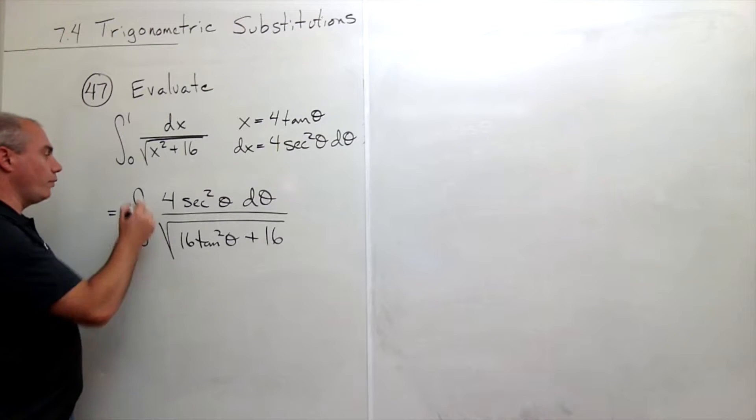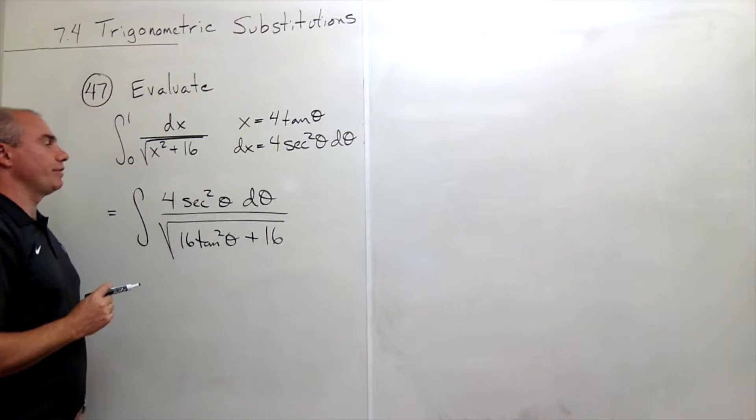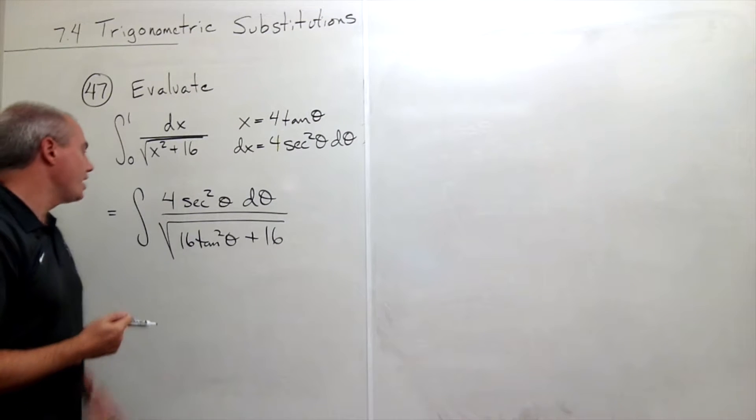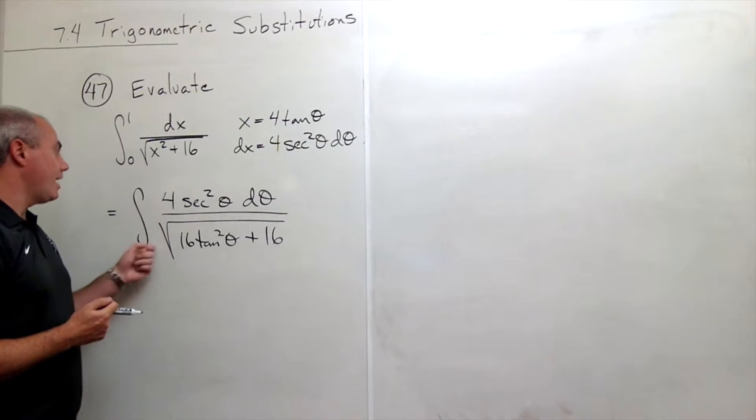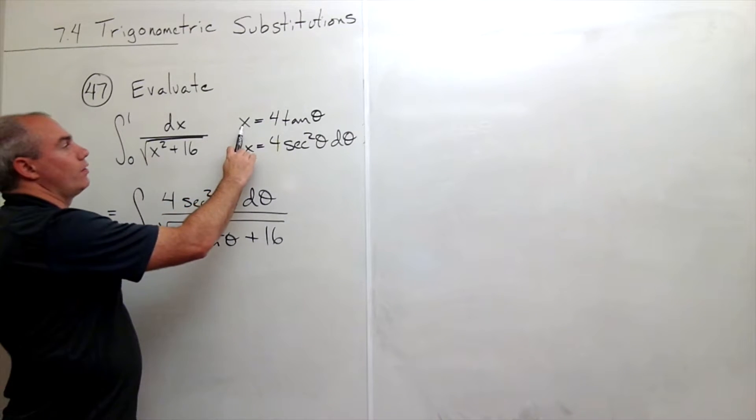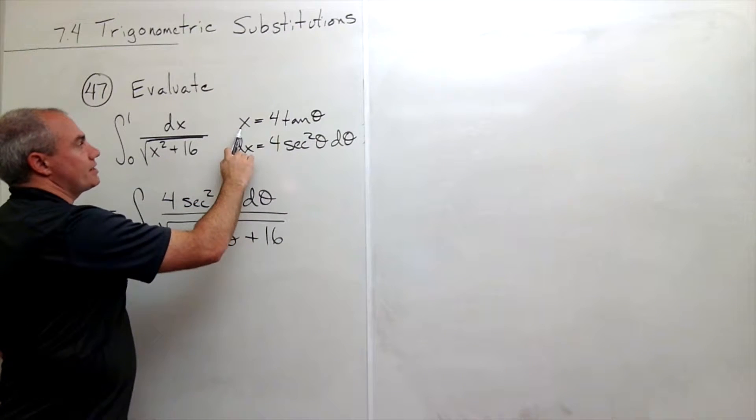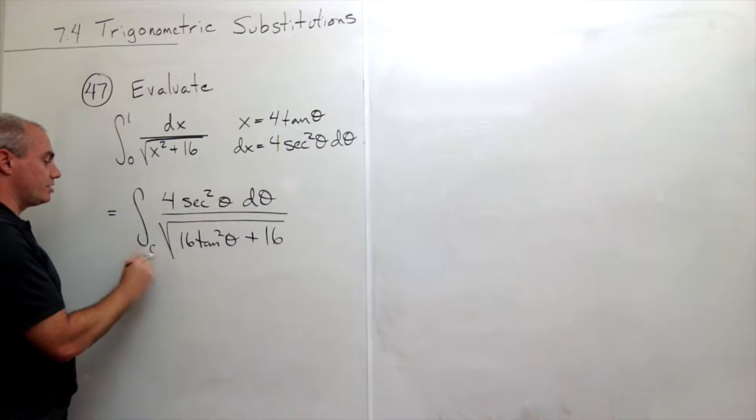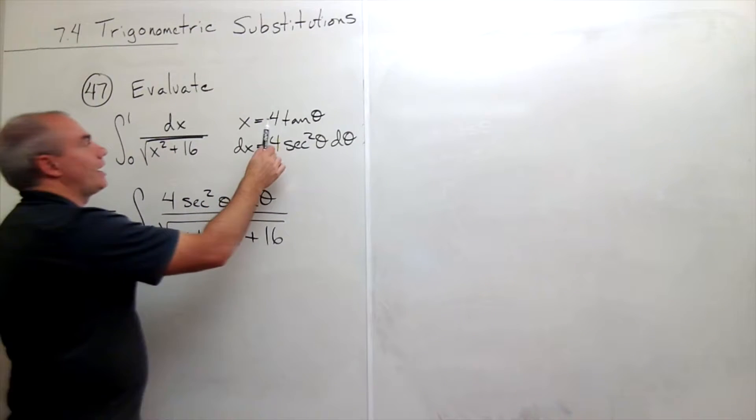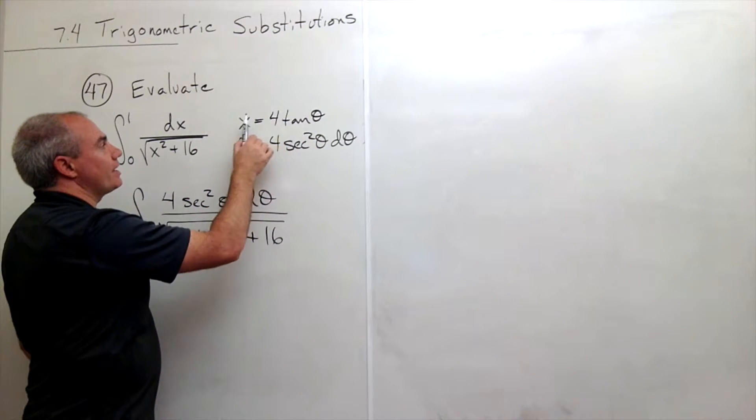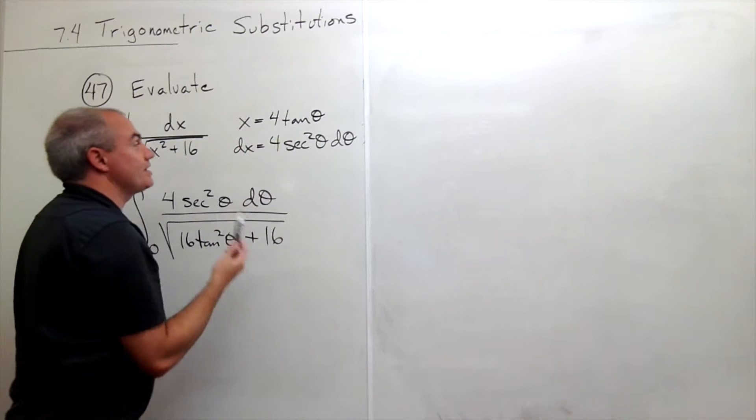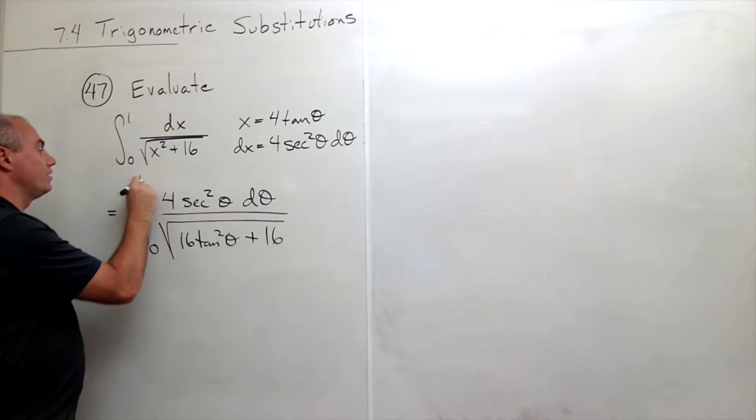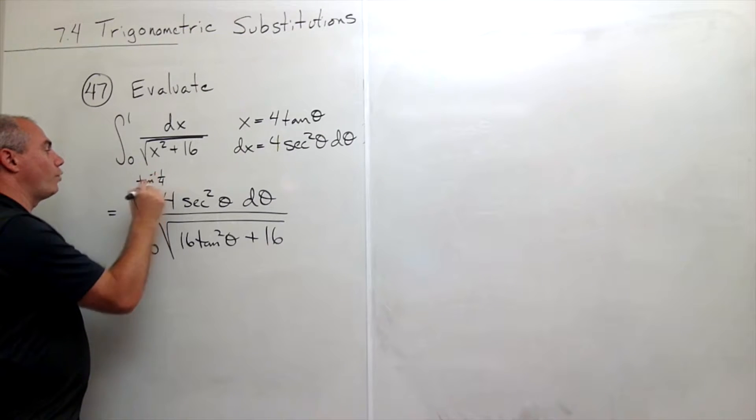And now we get to deal with our limits of integration. There's a couple ways that I can go about dealing with these limits of integration. I can say, if x is 0, what is theta? In this case, if x was 0, tangent of theta would be 0, and so this would be 0. And then what if x was 1? Then I get that tangent of theta is a fourth, and so theta is tan inverse of 1 fourth, which is perfectly fine to write tan inverse of 1 fourth up here.